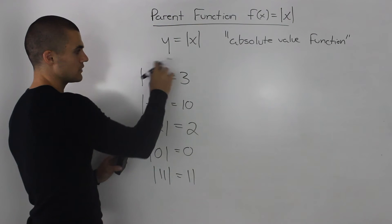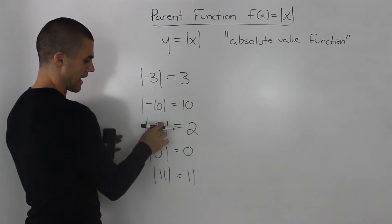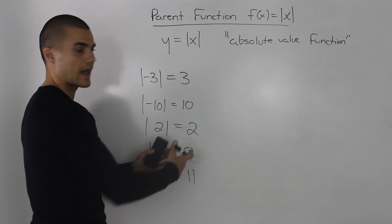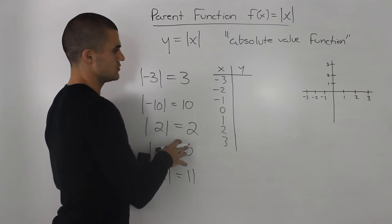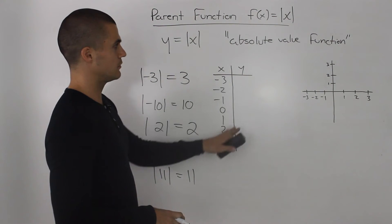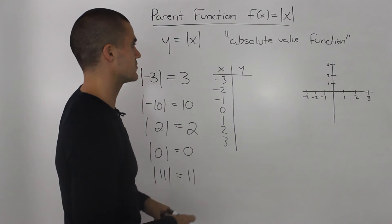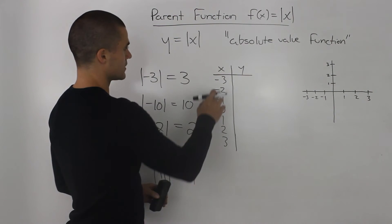So basically, any negative values turn positive, any positive values stay as they are. So using that information, let's make a table of values for this function and then let's plot it to see what the shape of it looks like.